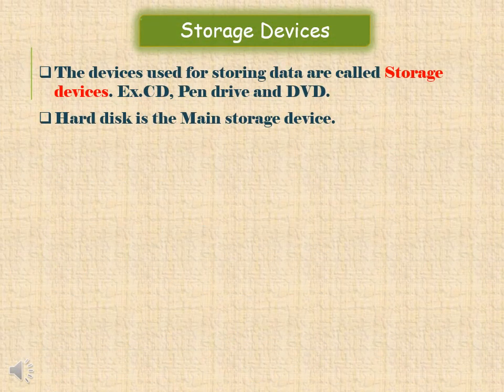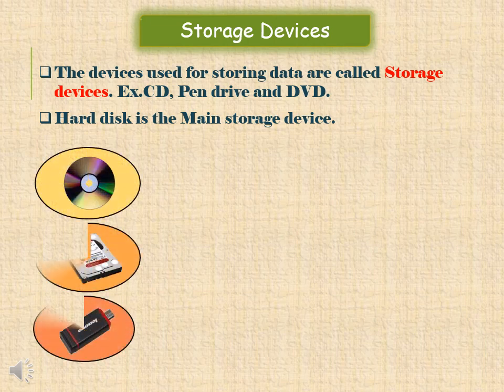Storage Devices. The devices which are used for storing data are called storage devices. Hard disk is the main storage device which stores the entire work we do on a computer. Some of the storage devices are CD, pen drive, DVD, etc., which are used to store information.